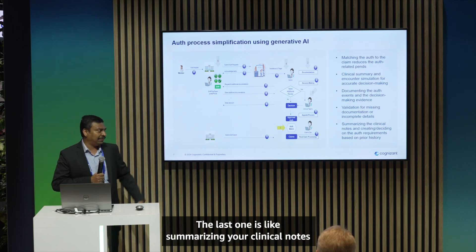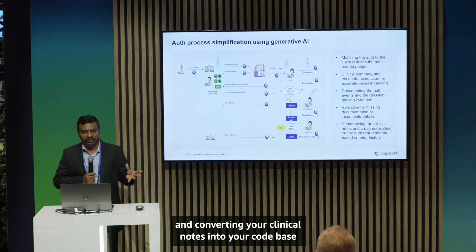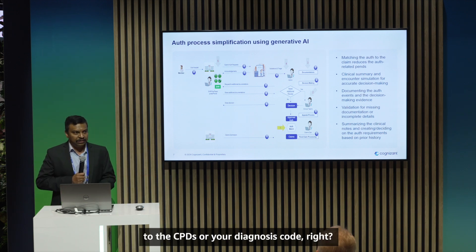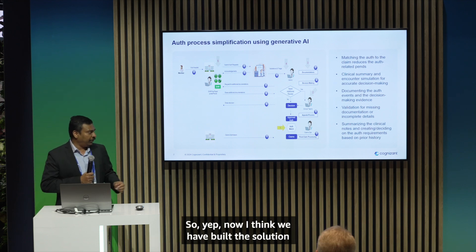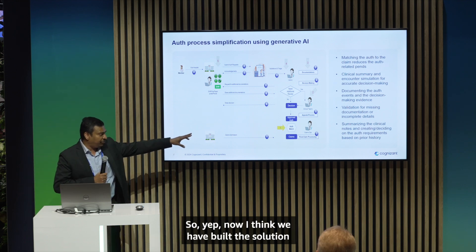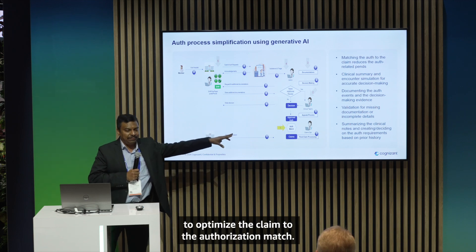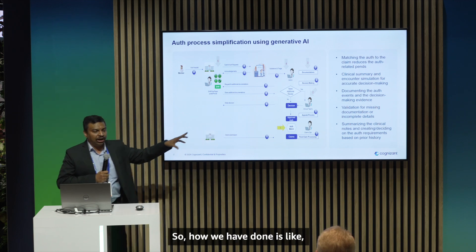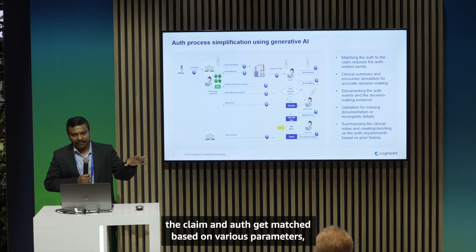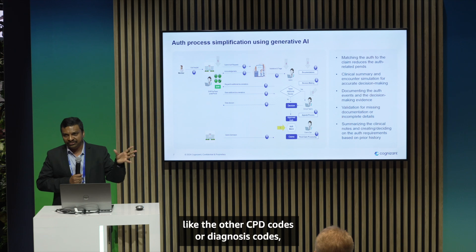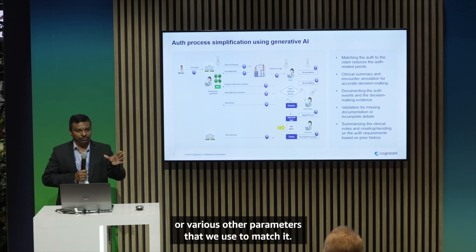The last area is summarizing clinical notes and converting them into code — CPT codes or diagnosis codes. We have built the solution to optimize the claim-to-authorization match. The claim and auth get matched based on various parameters — CPT codes, diagnosis codes, and various other parameters used to match them.